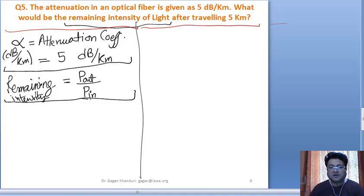The fraction would give us remaining intensity, because we are comparing the present status from the initial value. So we want to get P_out by P_in.